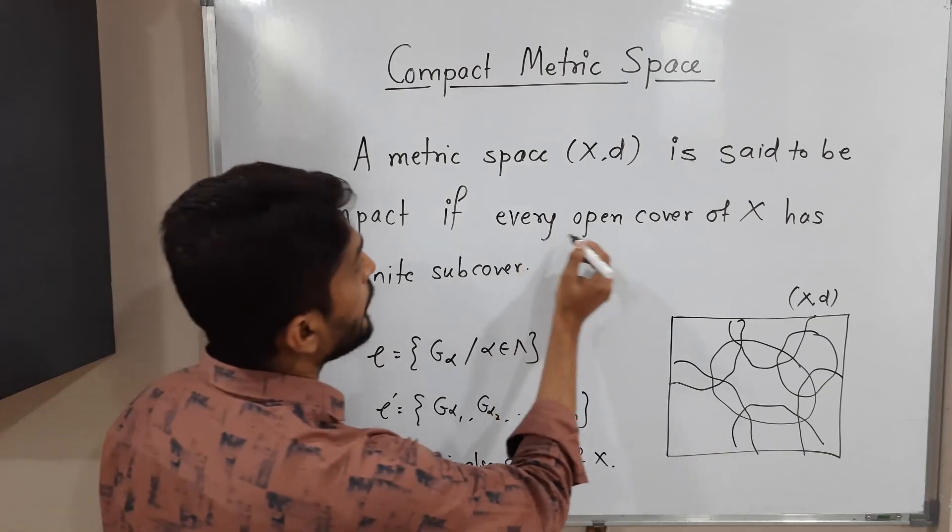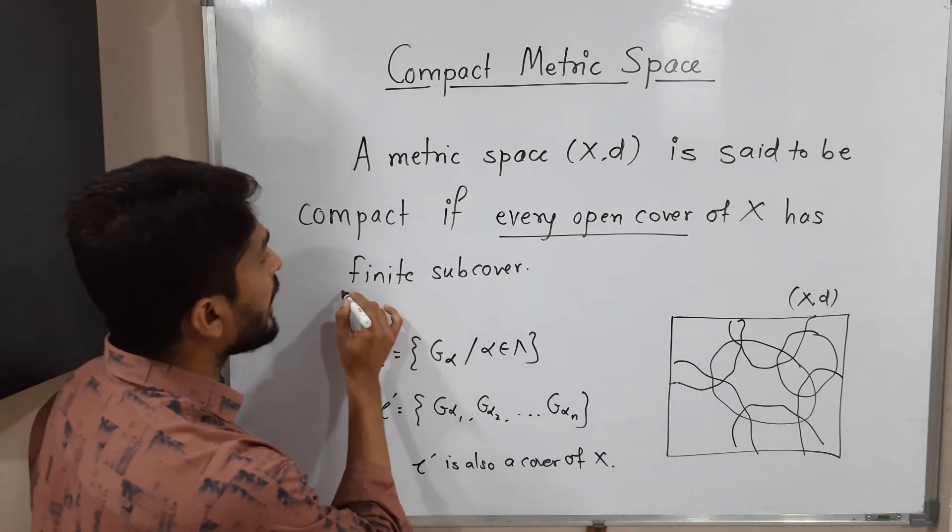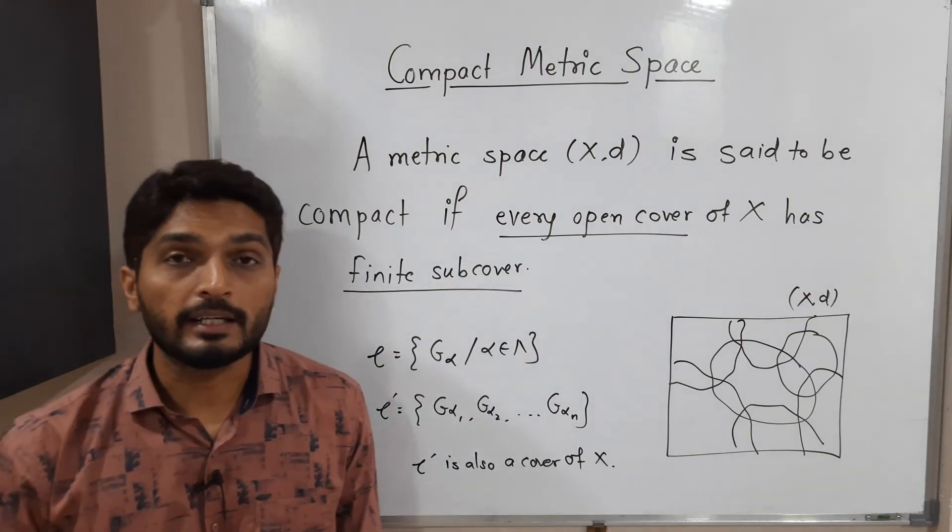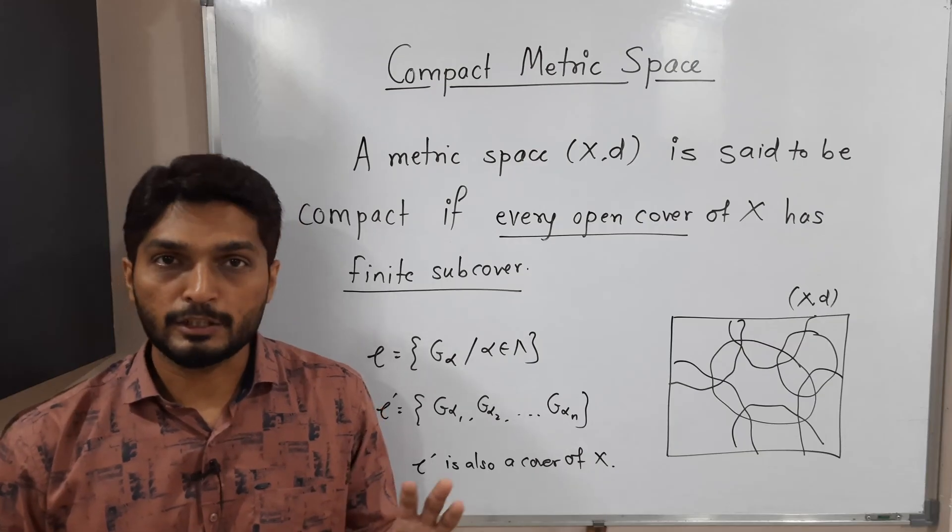So let me repeat: every open cover - if you have any open cover of X - it should have a finite subcover. Then we can declare the given metric space (X,d) is a compact metric space.